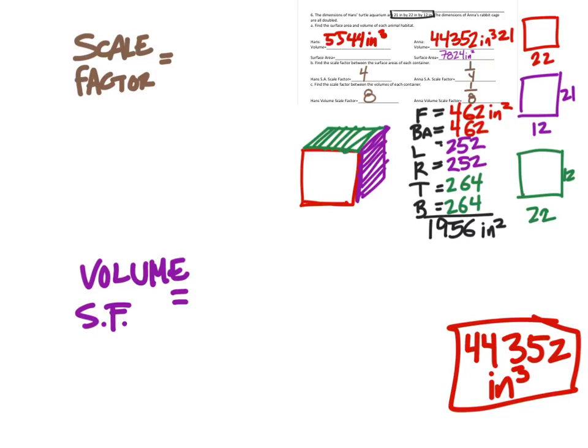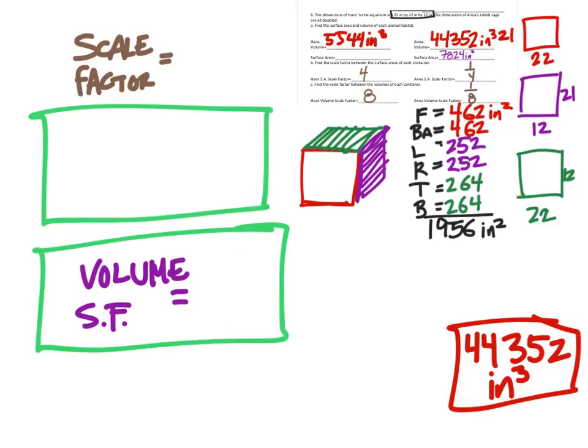We can look back right now, we found the area scale factor and the volume scale factor like this. Now that's for Hans, that's what we multiplied Hans's dimensions by to get the new volume and surface area. But we just reciprocate those to know what we need to multiply Anna's by to get Hans's volume and surface area.